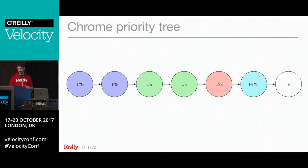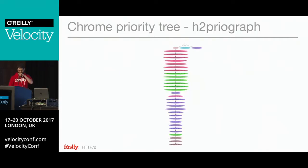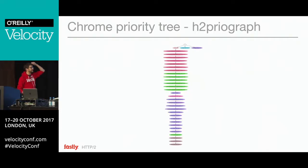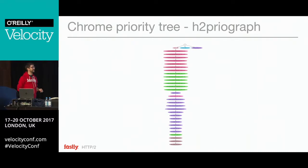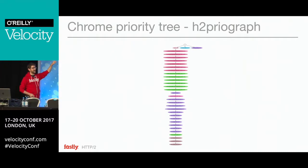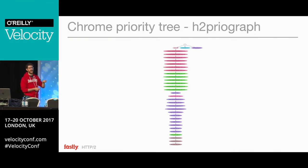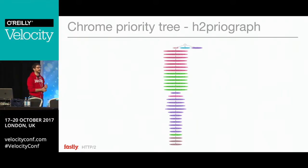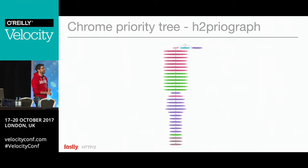There's an effort to create a browser API that allows developers to tweak priorities. In terms of who knows what priorities should be, the developer of the page comes first, then the browser, then the server. An H2Priograph tool was written that takes Chrome internals data for a given page and shows how Chrome reordered the different streams.